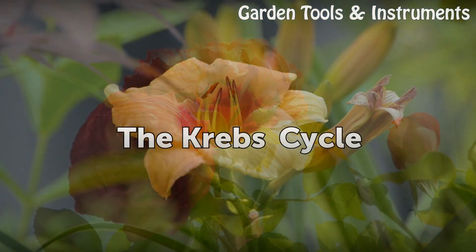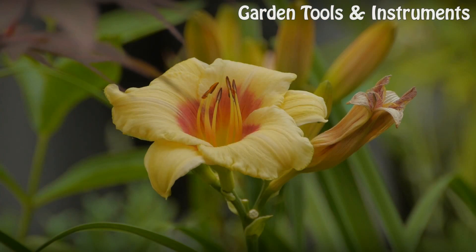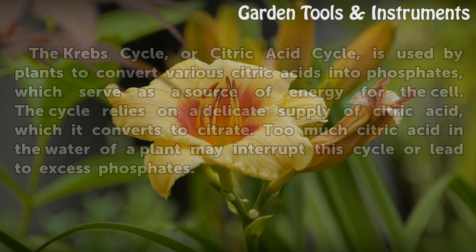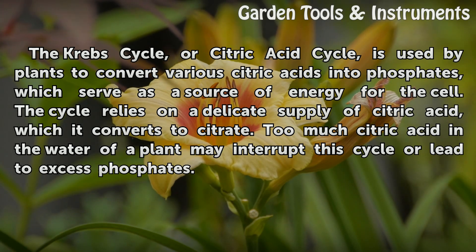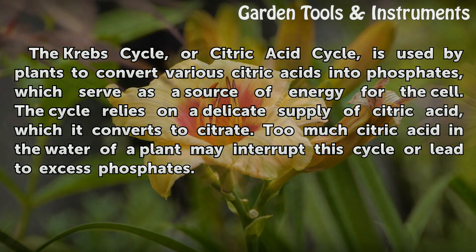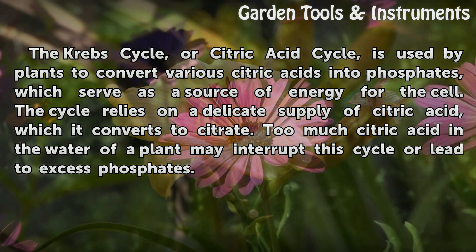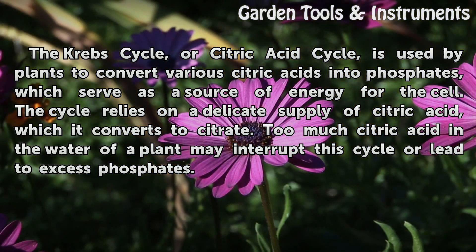The Krebs Cycle. The Krebs cycle, or citric acid cycle, is used by plants to convert various citric acids into phosphates, which serve as a source of energy for the cell. The cycle relies on a delicate supply of citric acid, which it converts to citrate. Too much citric acid in the water of a plant may interrupt this cycle or lead to excess phosphates.